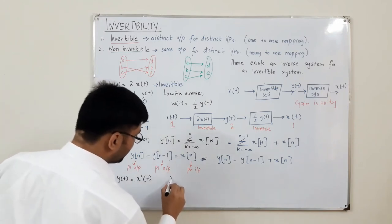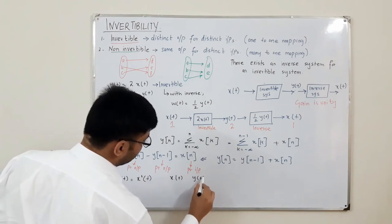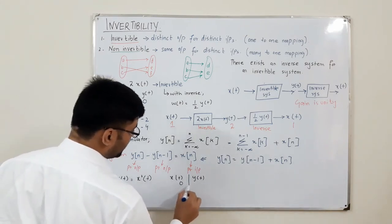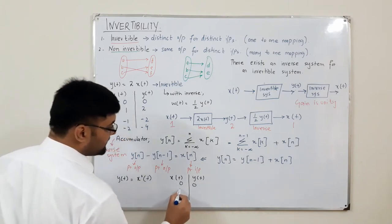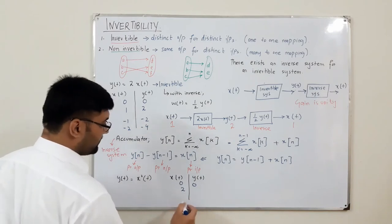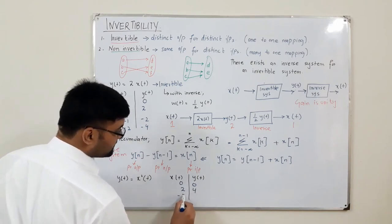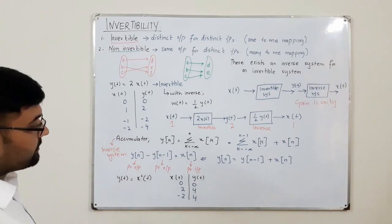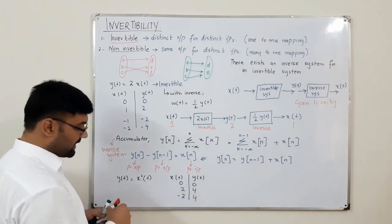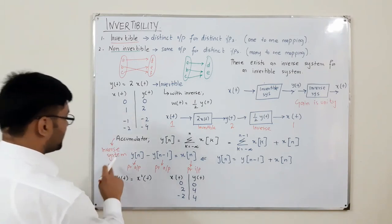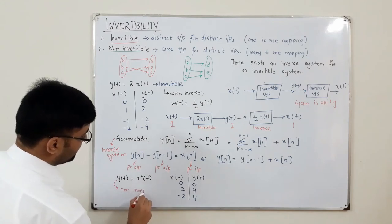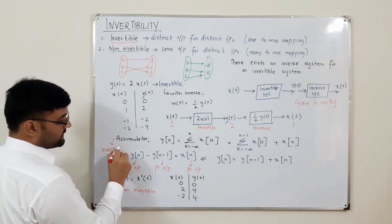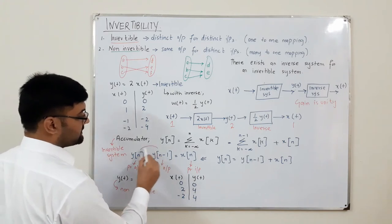For y(t) = x²(t), making a table: for x(t) = 0, y(t) = 0; for x(t) = 2, y(t) = 4; for x(t) = -2, y(t) = 4 again. This is a many-to-one mapping — different values of input give the same value of output — so this is a non-invertible system.